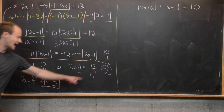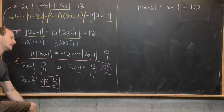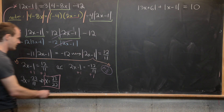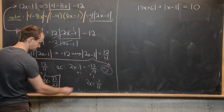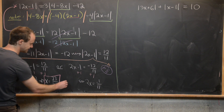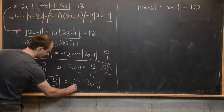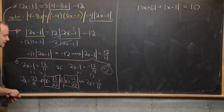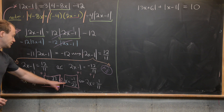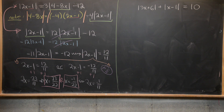For the second equation, we add 11 over 11 to negative 12 over 11, giving us negative 1 over 11. So we have 2x equals negative 1 over 11, and dividing both sides by 2 gives x equals negative 1 over 22. These two numbers — 23 over 22 and negative 1 over 22 — are the two solutions to this original equation.